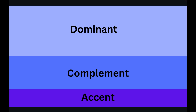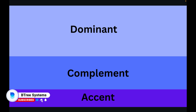The next thing is accent color. What is accent color? You can use 10% of accent color. This is used for call-to-action buttons, clickable elements, and main attractive content on the screen — anything that needs to stand out. You use just 10% of this color.